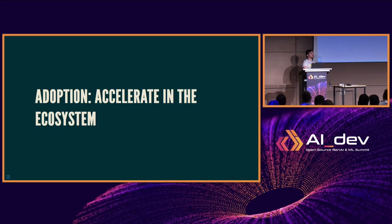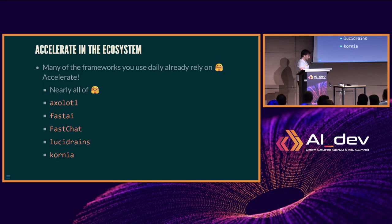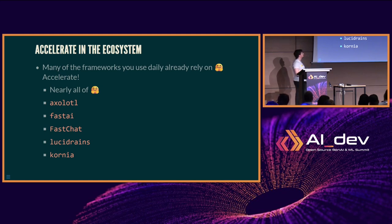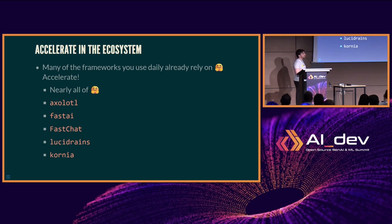You hear about bigger integrations like Transformers and FastAI, and what that allows us to see is how far the community has taken Accelerate. We use this internally — nearly all of our projects run off Accelerate, including Diffusers, Transformers, and the LLM leaderboard. New frameworks like Axolotl have come out of the woodwork helping democratize machine learning. FastAI has been using Accelerate for nearly two years. LucidRains' ML reimplementations nearly all use Accelerate on the back end. And Cohere runs all of their training off of Accelerate.